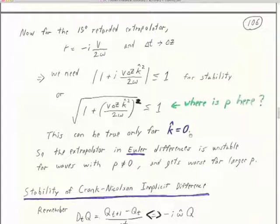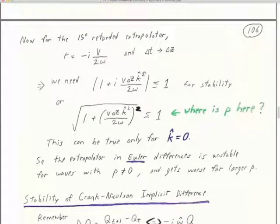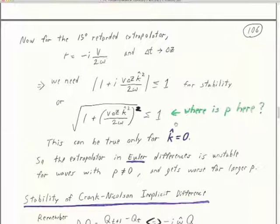That's why we're going to use the Crank-Nicholson implicit finite difference — which required solving those tridiagonal equations. Let's figure out the stability of Crank-Nicholson. The Fourier dual of the first time difference [Q(t+1) - Q(t)] / Δt is omega-hat, our estimated time frequency. The Crank-Nicholson method applies the first time difference on the left and averages the second x difference applied to Q(t+1) and Q(t) on the right, then multiplies by R.